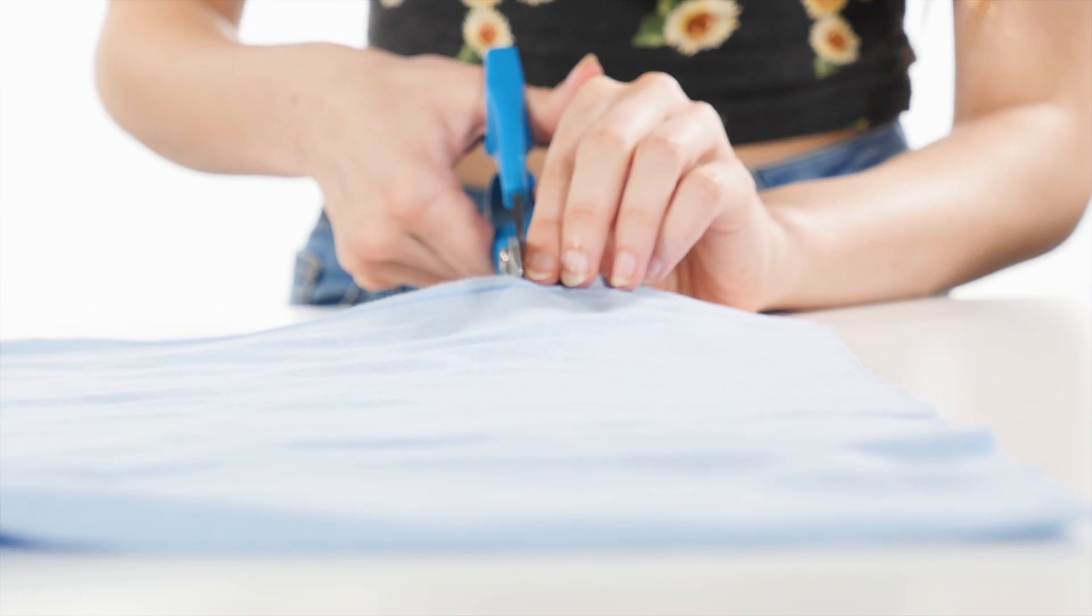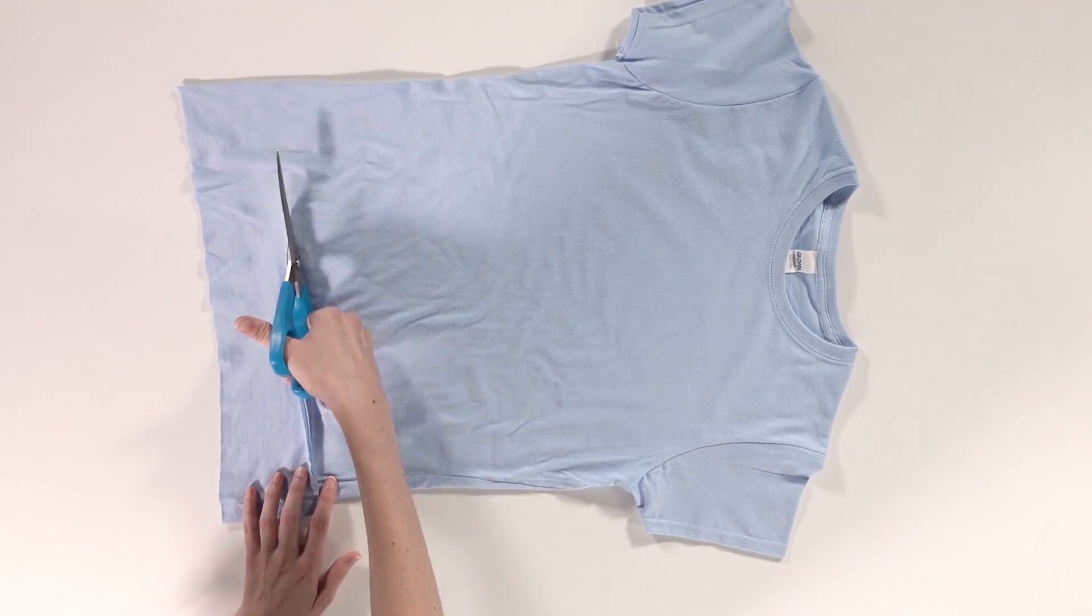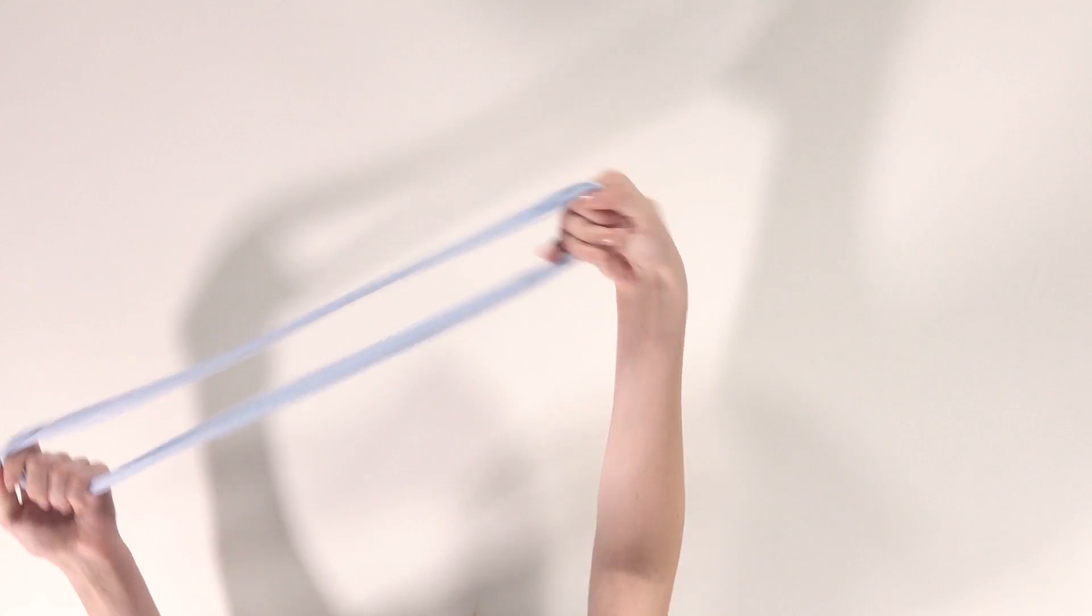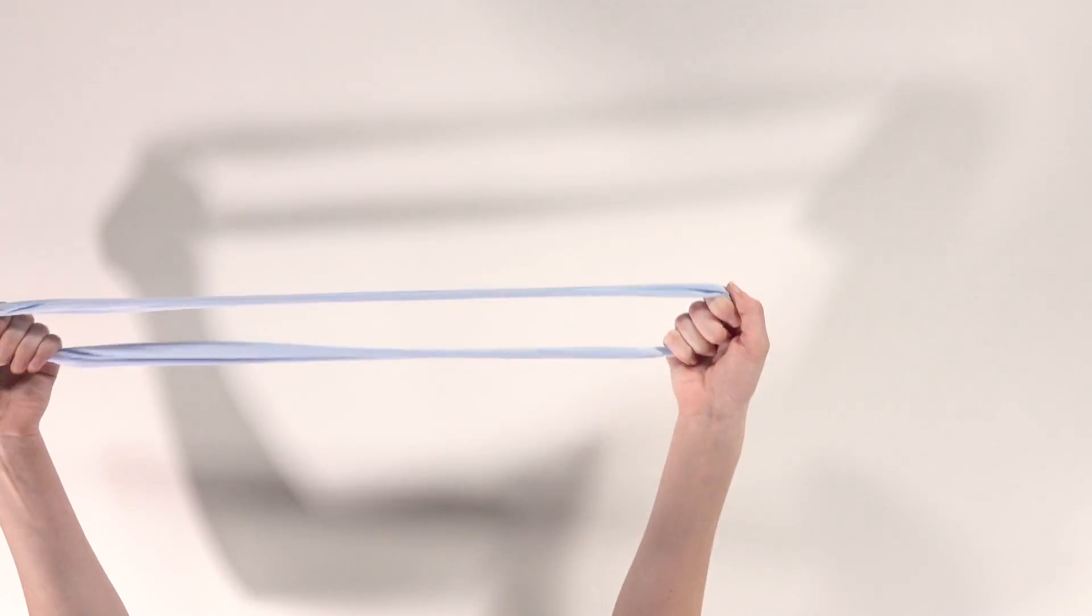Once you've removed the bottom hem, you're going to cut straight across the middle of the shirt so that you have a loop of fabric like this, about three inches in width. For best results, you'll want to use a shirt without a side seam.